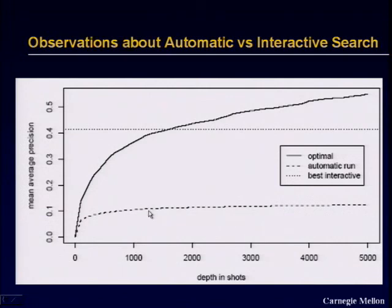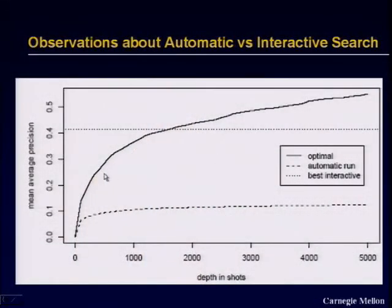We can look at that and say that's not very good. Then we said, suppose we had an oracle that could do this better — for the first 1,000 images, put all the good ones in the front and the not-so-good ones in the back. That's plotted on the solid black curve. What we can see is that if you had an oracle that looked at 2,000 of the automatic run images, you would do better than the best interactive system. And the best interactive system is very much like the classic InfoMedia system I showed at the beginning — that's state of the art.